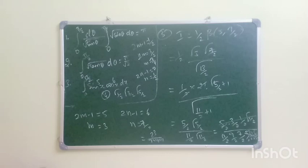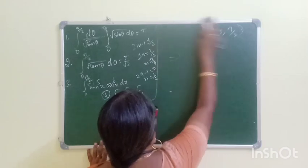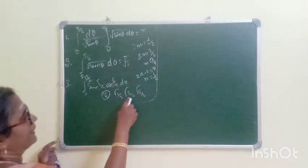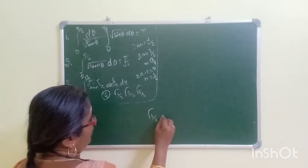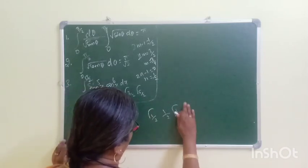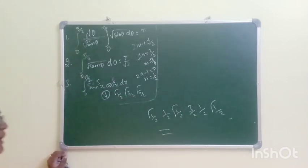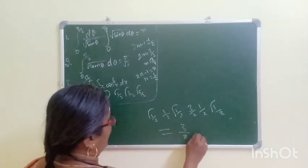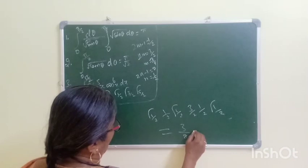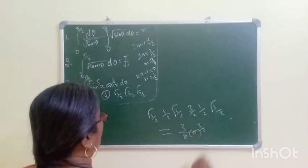We have no problem, we will discuss. These are beta gamma functions — we will discuss beta gamma function applications. We will cancel. This is Γ(1/2), Γ(3/2), Γ(5/2), Γ(1/2). 1/2·Γ(1/2). This is 3/2, 1/2, Γ(1/2). Now we simplify it — how to find Γ(1/2). 3/8 into Γ(1/2), 5/3/2. So this is our answer.